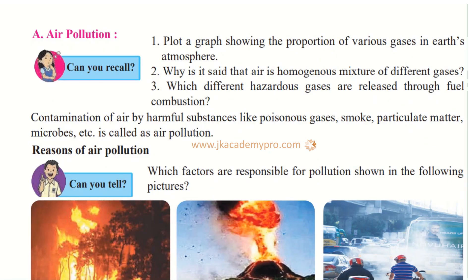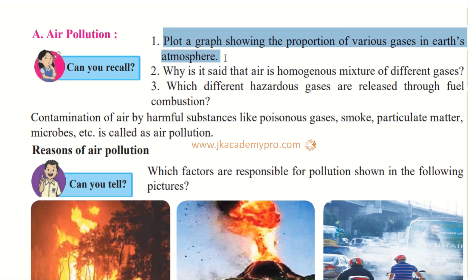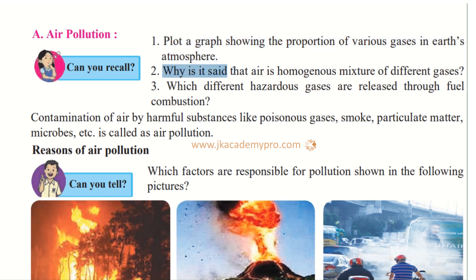Now let us understand about air pollution in detail. What are the reasons for air pollution and how we can take care of it? Can you recall and plot a graph showing the proportion of various gases in the earth's atmosphere? We have learnt that air is a mixture of gases — oxygen, carbon dioxide, nitrogen, and other inert gases. Make a graph showing the percentage of each gas. And why is it said that air is a homogeneous mixture of different gases?